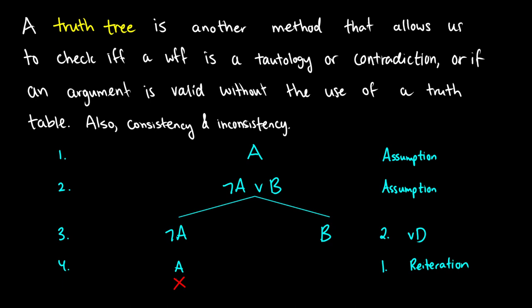First of all, what we always do is on the left side we always number our steps. This allows us to keep track of what we're doing in each step. We always start our truth trees with an assumption — this is what we're taking for granted. If we want to check if a well-formed formula is a tautology, then that tautology would be our assumption, and same with a contradiction. If we have a valid argument we're checking, we put our assumptions and our conclusion there, and we'll talk about that when we get to it.